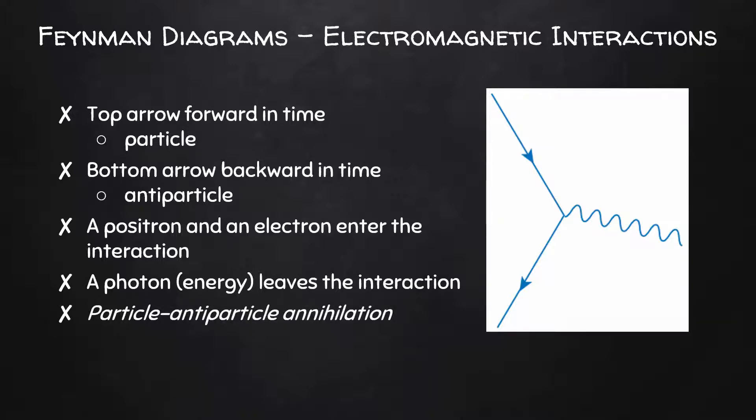This is a particle-antiparticle annihilation. The particle, the electron, and its antiparticle, the positron, collide with each other, annihilate each other. They cease to exist. And from this interaction, energy is released in the form of a photon.